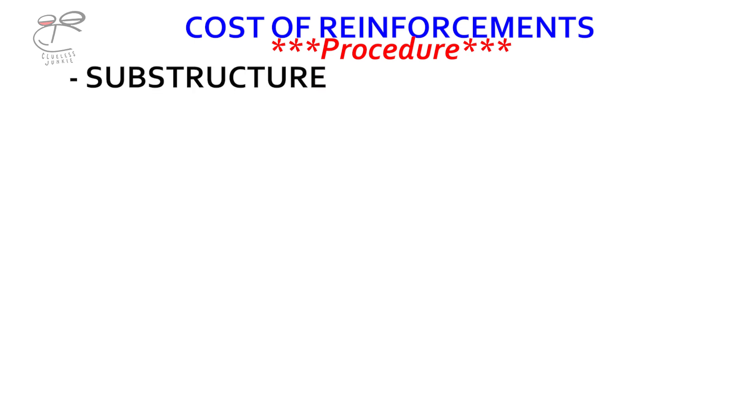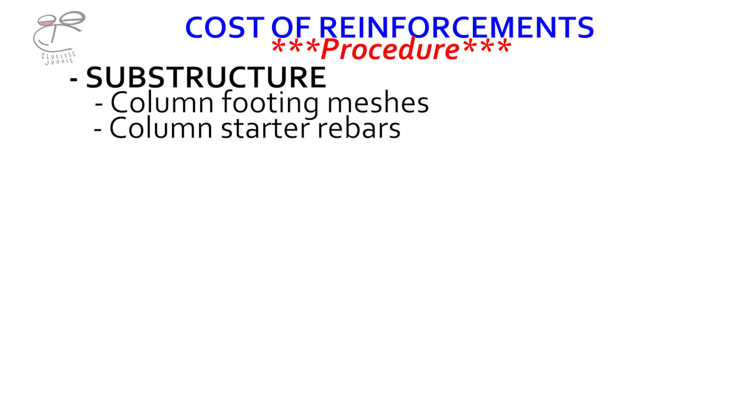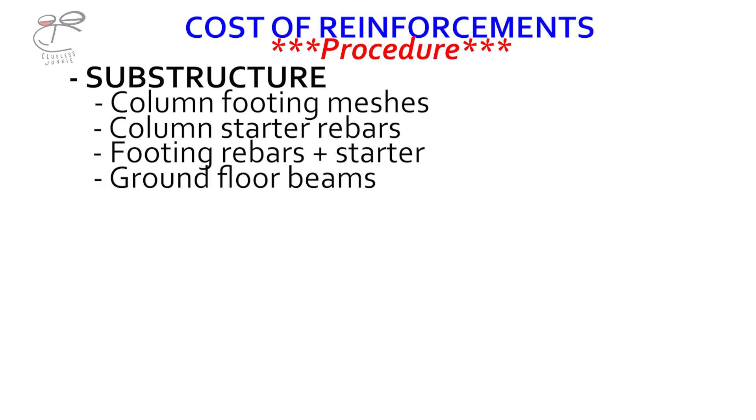The procedure: firstly we're doing calculations for the substructure — these are the parts beneath the ground. We're talking about column footing meshes, then we'll calculate for column starter rebars, the footing rebars and starters for the foundation walls, then we'll do for the ground floor beam and the staircase starter rebars. That's about it for the substructural part.